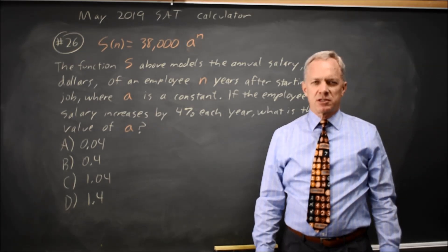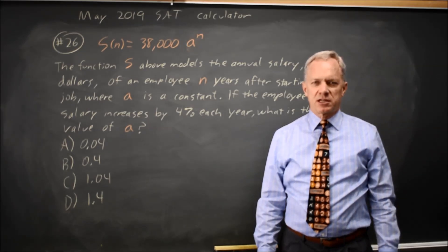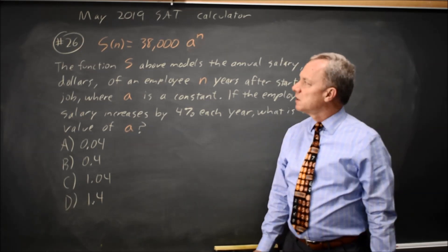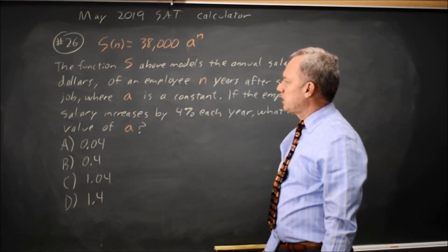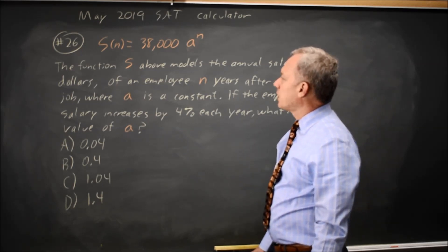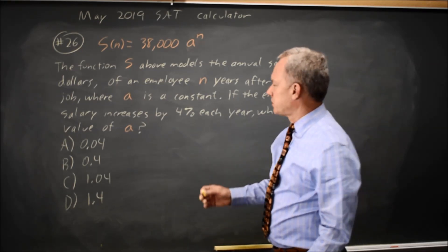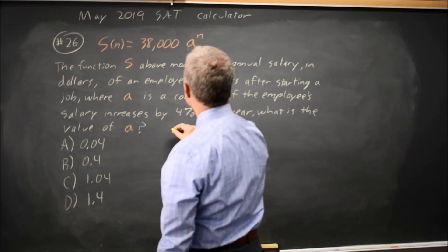This is calculator question number 36 from the May 2019 International Exam. The College Board gives us an exponential equation for the growth of a person's salary, and they ask what A is if the growth rate is 4%.